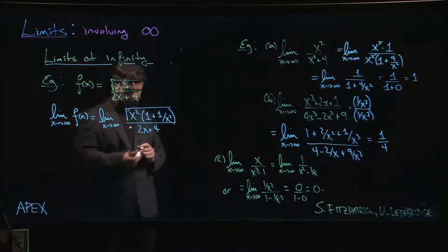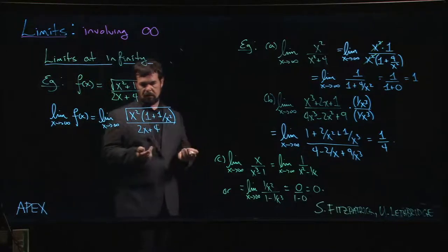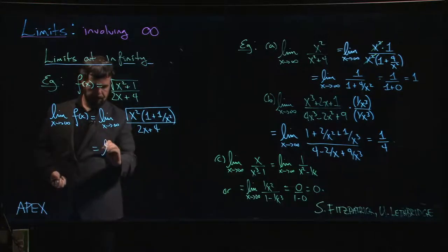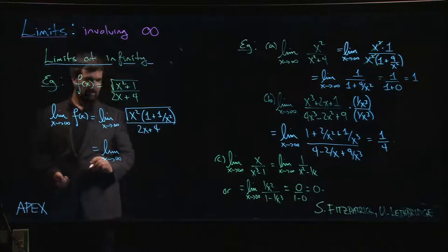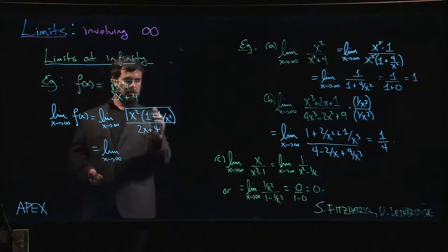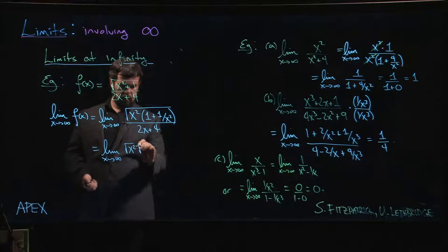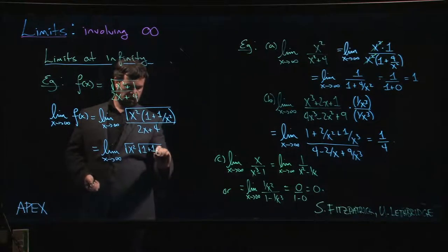Leave the bottom alone for now. If we want, we can factor an x - in fact, we'll do that in the next step. Now I take the limit as x goes to infinity. If you have a square root of a product, you can write that as the product of the square roots, right? So square root of x squared, square root of one plus one over x squared.